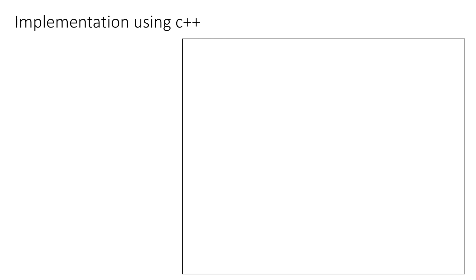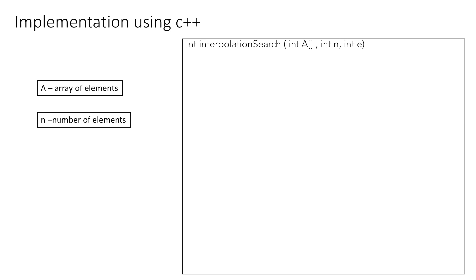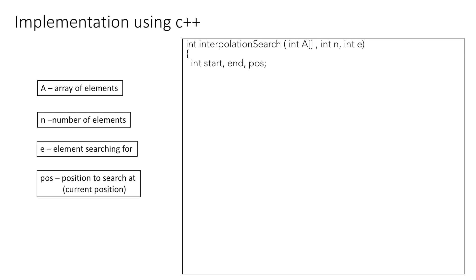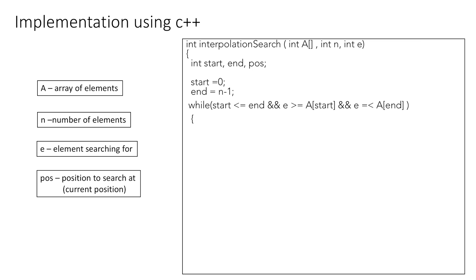Now let's implement this using C++. We start our interpolation search function which takes as input an array a, an integer n which is the number of elements in the array, and an integer e that is the element we are looking for, and it returns the index of the element if present, otherwise returns -1. We declare variables start, end, and position, where pos represents the current position being searched. We initialize start to 0 and end to n-1, then start the while loop with the condition that start is less than or equal to end and the element is within the range of array elements.